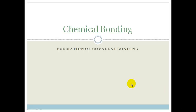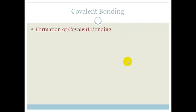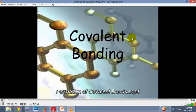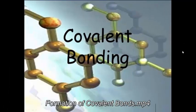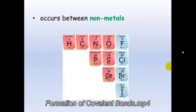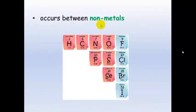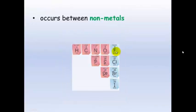Good day Grade Tens. In this lesson we are going to learn about the formation of covalent bonding. Covalent bonding occurs between non-metals, and I have listed the non-metals here for you. Remember they are found on the right hand side of the periodic table.